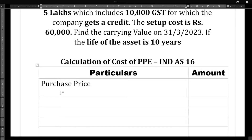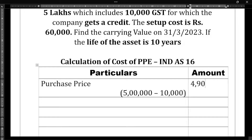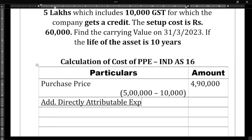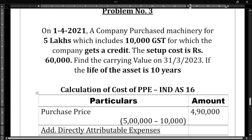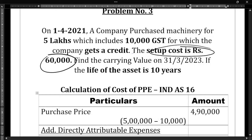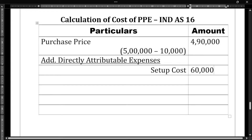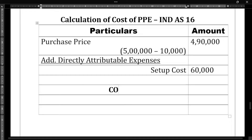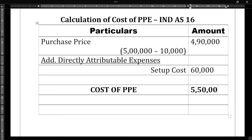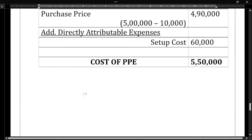So here it is five lakhs minus ten thousand, which gives you four lakh ninety thousand. Next, we need to add directly attributable expenses. The only directly attributable expense given is setup cost, which is sixty thousand rupees. There are no other directly attributable expenses given. So four lakh ninety thousand plus sixty thousand gives us a cost of PPE of five lakh fifty thousand.